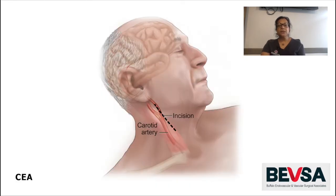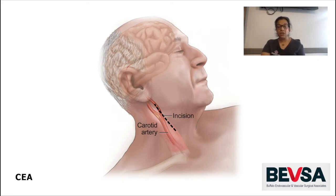The carotid endarterectomy is an inpatient procedure at Gates Vascular Institute where you will undergo the procedure and then stay overnight at Buffalo General Hospital. The procedure usually lasts two to three hours. Most patients are put to sleep, and occasionally we do this with regional anesthesia and twilight sedation.